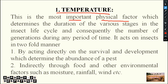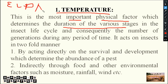Temperature determines the duration of various stages. What do we mean by that? Duration of various stages means your egg, larva, pupa, and adult — these are the stages. The duration refers to how many days each stage lasts. These are the durations of the stages in the insect life cycle.